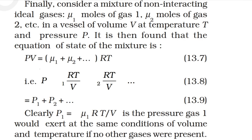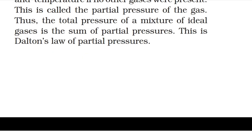If we fix μ and T, we get PV = constant. Consider a mixture of non-interacting ideal gases: μ1 moles of gas 1, μ2 moles of gas 2, etc., in a vessel of volume V at temperature T. The equation of state of the mixture is PV = (μ1 + μ2 + ...)RT. Here P1 = μ1RT/V is the pressure gas 1 would exert alone — this is called the partial pressure. The total pressure of a mixture of ideal gases is the sum of partial pressures — this is Dalton's law of partial pressures.